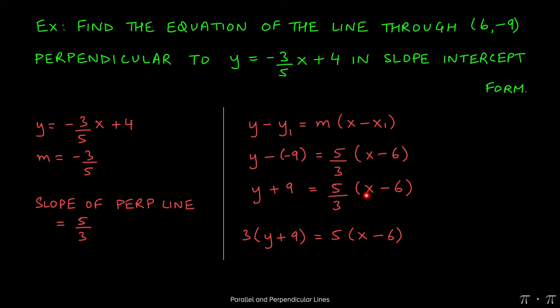Multiplying both sides of the equation by 3 actually clears this fraction. So if we multiply the 3 over to the other side, we get 3(y + 9) = 5(x - 6).